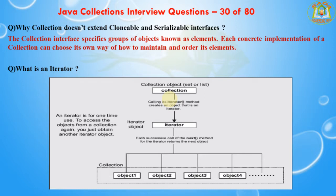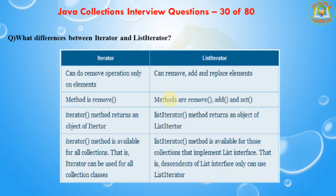The next question is: what is the difference between Iterator and ListIterator? An Iterator can be used to traverse Set and List collections, while a ListIterator can be used to iterate only over Lists. The Iterator can traverse a collection only in the forward direction, whereas the ListIterator can traverse a list in both directions. The ListIterator implements the Iterator interface and contains extra functionality such as adding an element, replacing an element, and getting the index position of previous and next elements. The Iterator supports only remove(); the ListIterator supports remove(), add(), and set() methods.